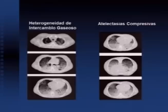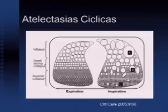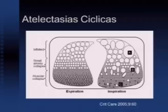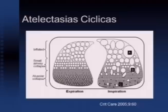Cyclic atelectasis at the interface between collapsed and open lung shows how things change according to patient position. Posteriorly, air from the ventilator is being received. We discuss cyclic atelectasis at the junction between the ventilator-assisted lung and the closed lung. The role of open lung ventilation and air recruitment is to keep the lung open.